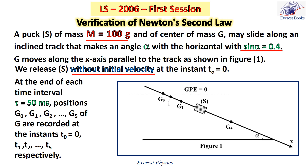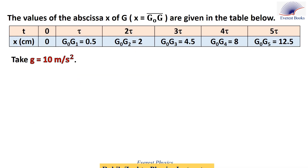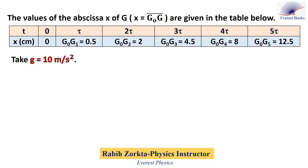We release S without initial velocity at time 0. At the end of each time interval tau, which equals 50 milliseconds, positions G0, G1, G2, G3, G4, and G5 of G are recorded at instances T0, T1, T2, T3, T4, and T5 respectively. The values of the x-axis coordinates of G, where x equals G0G, are given in the table below. Take g equals 10 meters per second squared.